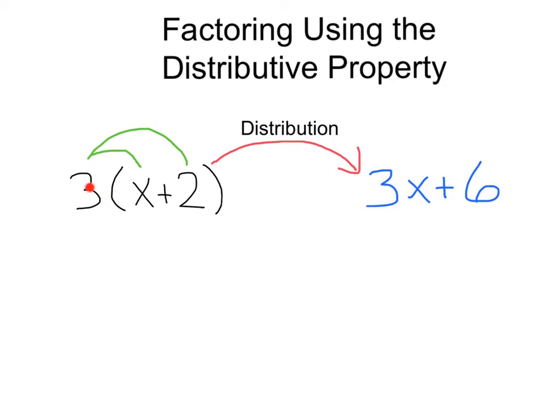For example, this 3 would multiply to the x, 3x, and then to the 2 to give us 6. So 3 times x plus 2 distributes to give us 3x plus 6.